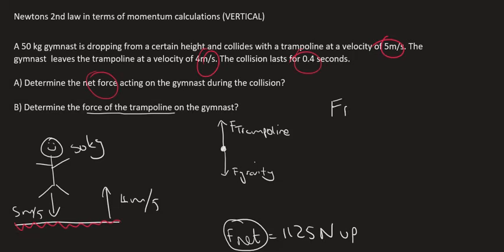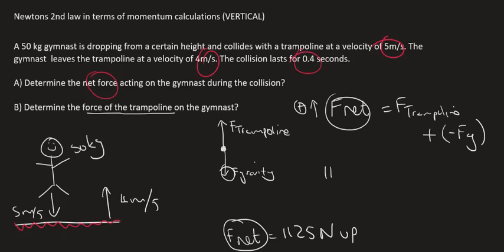Why did I minus gravity? Because gravity is acting down and I've chosen upwards as positive. Now we know F_net equals 1,125. F_trampoline - we don't know what that is, but we're going to calculate it. Now gravity equals mass times 9.8, so 1,125...